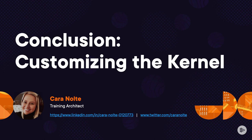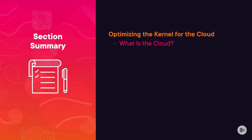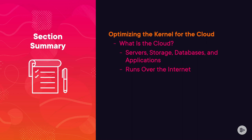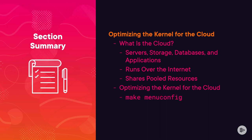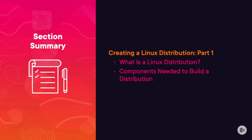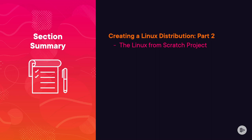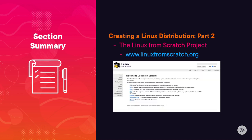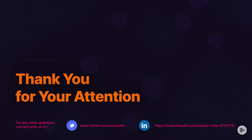Hello, and welcome to this conclusion on customizing the kernel. In this section, we talked about what the cloud is — consisting of servers, storage, databases, and applications running over the internet with shared pooled resources. Then we talked about optimizing the kernel for the cloud using the make menuconfig command. In creating a Linux distribution part one, we talked about what a Linux distro is and the components needed. In creating a Linux distribution part two, we talked about the Linux from Scratch project at www.linuxfromscratch.org.